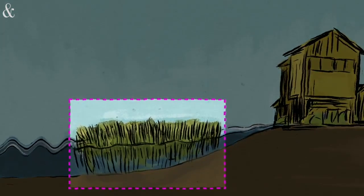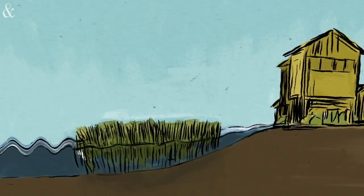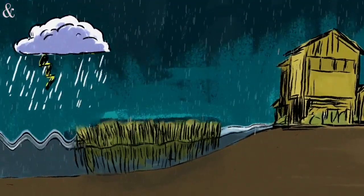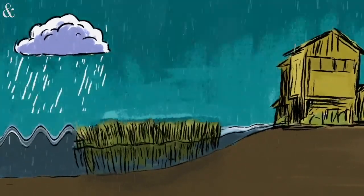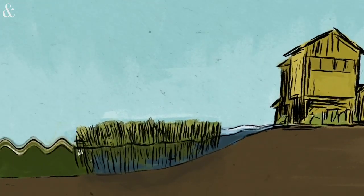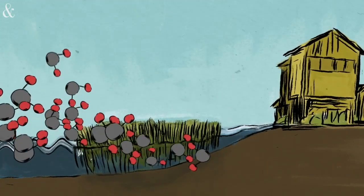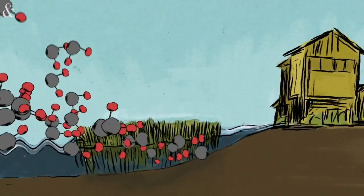They also protect and stabilize shorelines from erosion by buffering waves and trapping sediment. They reduce flooding by slowing and absorbing rainwater, and they maintain water quality by filtering runoff and metabolizing excess nutrients. They also serve as reservoirs for carbon dioxide, holding in greenhouse gas that would otherwise be released into the atmosphere.